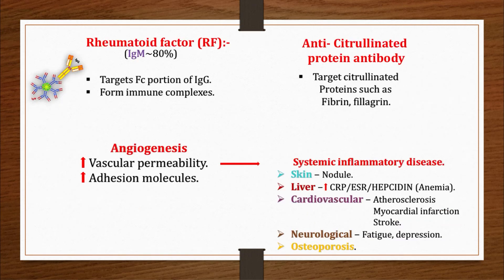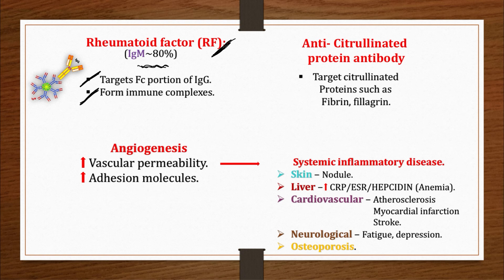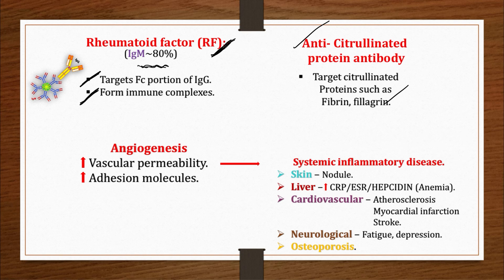Rheumatoid factor is present in almost 80% of rheumatoid patients. It is an IgM against the Fc portion of IgG that forms immune complexes, which activate the complement cascade — especially C5a — causing chemotaxis, inflammation, arthritis, lupus nephritis, and vasculitis. Anti-CCP is an antibody to citrullinated proteins such as filaggrin and fibrin. Rheumatoid factor is highly sensitive but less specific, whereas anti-CCP is highly specific and correlates with disease activity. Patients positive for both have a worse prognosis.